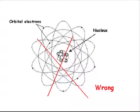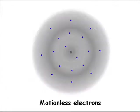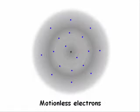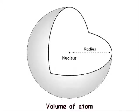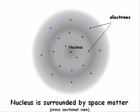So the present wave mechanical model of the atom is simply not correct. Since there is no such motion, there must be a force which prevents the electrons from falling into the nucleus. The volume of atoms and the elastic nature of atoms indicate that the nucleus of an atom is surrounded by a form of elastic matter.